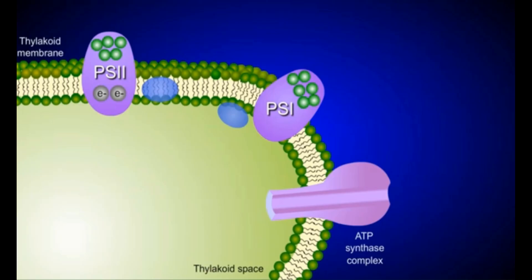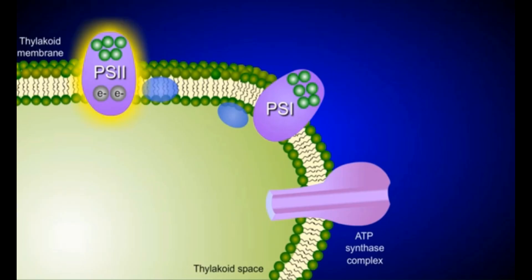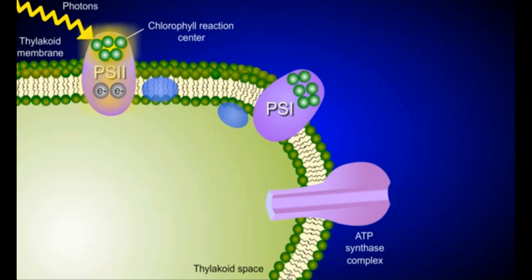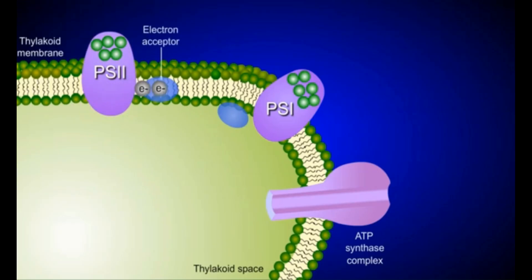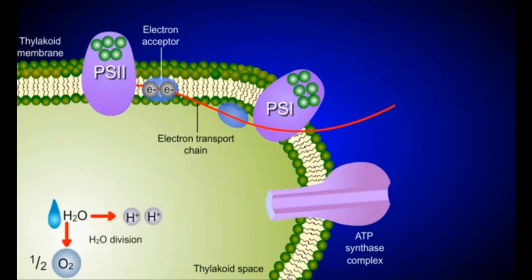The light reactions use two photosystems — Photosystem I and Photosystem II — both embedded in the thylakoid membrane. These photosystems are named for the order in which they were discovered, not for the order in which they participate in photosynthesis. The light reactions actually begin at Photosystem II. Photosystem II receives photons, or light energy, which is transferred to a chlorophyll reaction center, causing electrons to become energized. These electrons escape Photosystem II and move to a nearby electron acceptor molecule in the electron transport chain. To replace those leaving electrons, water is split, releasing oxygen, two hydrogen ions, and two electrons.